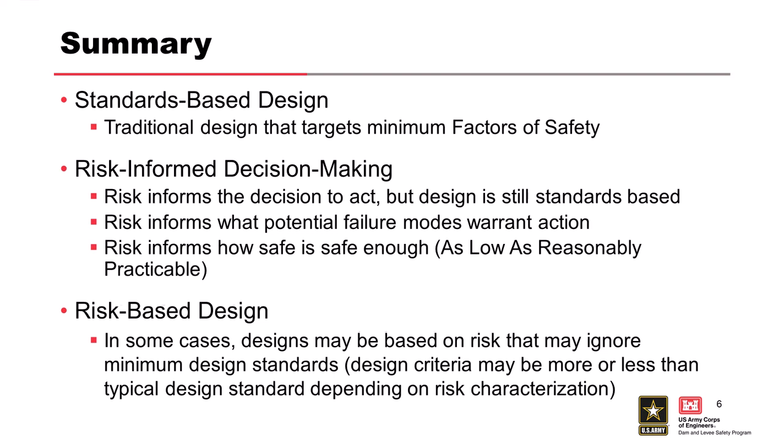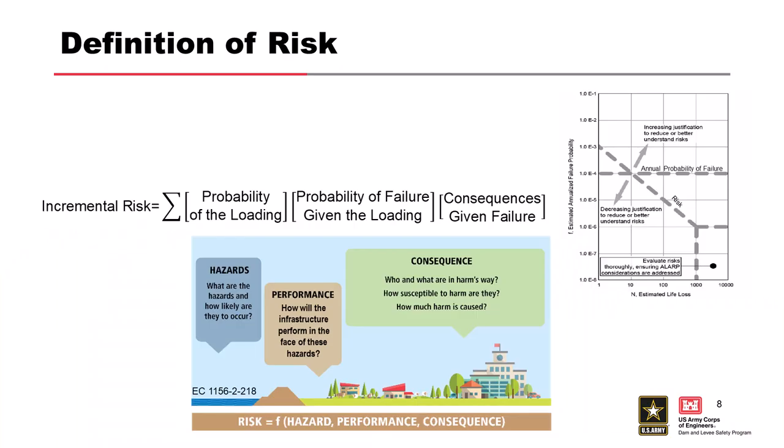The Corps of Engineers defines risk with a three-element equation: probability of loading — the annual probability of a hazard occurring, whether flood, seismic, wind, or ice load. This answers the 'what if' game that engineers like to play: what if we have a PMF and a wind event at the same time? We answer that by looking at the probability of those events occurring — specifically, the annual exceedance probability.